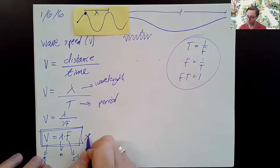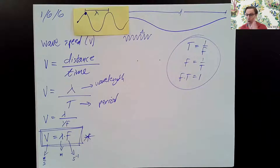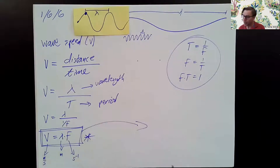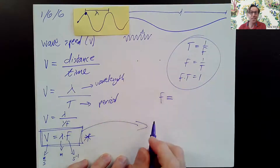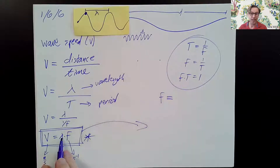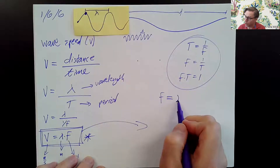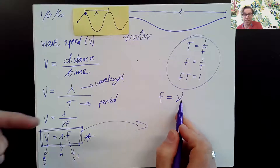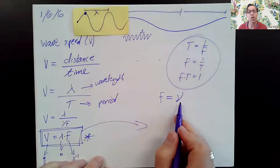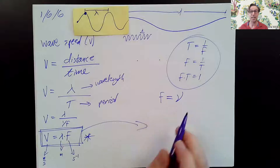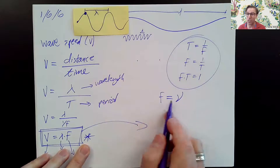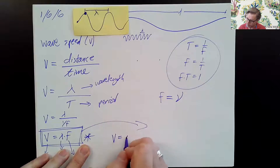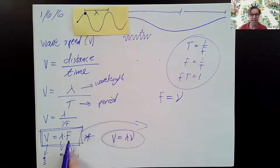It's worth putting a little asterisk next to it — very important. One little tidbit: sometimes we use the letter f for frequency, and sometimes we use the Greek letter nu. It kind of looks like a V that got poked on one side. It sounds like 'new,' or like that animal the GNU. So often, especially in more sophisticated books, you'll see V equals lambda nu — same thing.